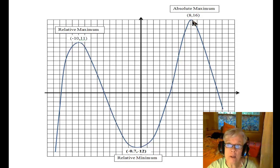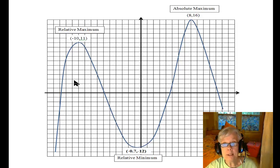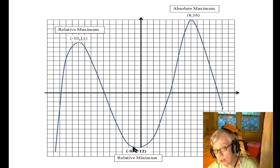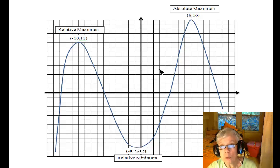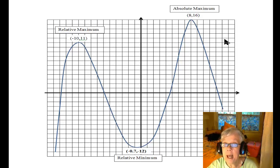These two points are the highest points on the graph. This is one of the lowest points, although the graph keeps going down forever over here and over here. So these points will eventually be much lower than this. For that reason, we call this the absolute maximum — this is absolutely the highest point on the graph. Now let's get to relative maximum.